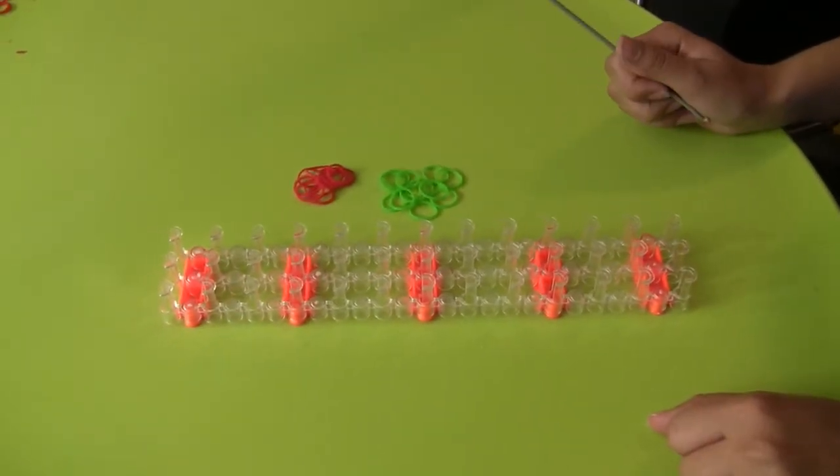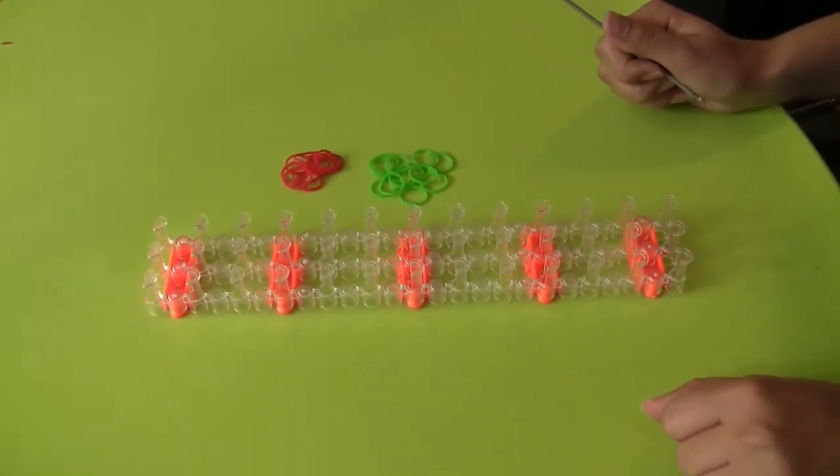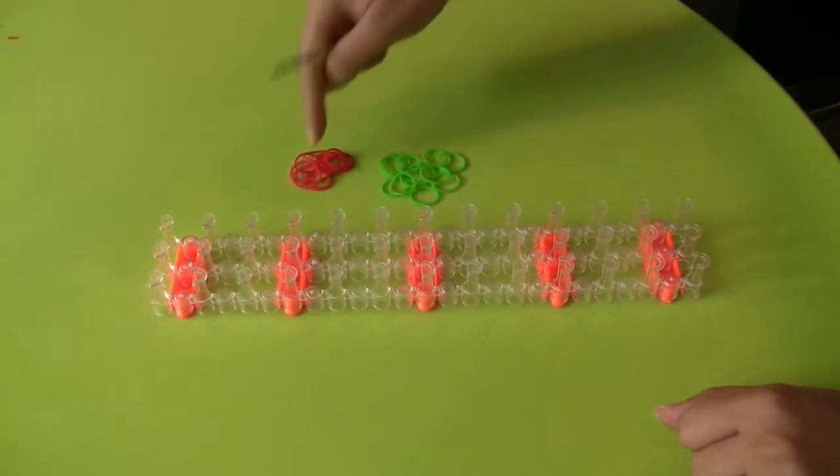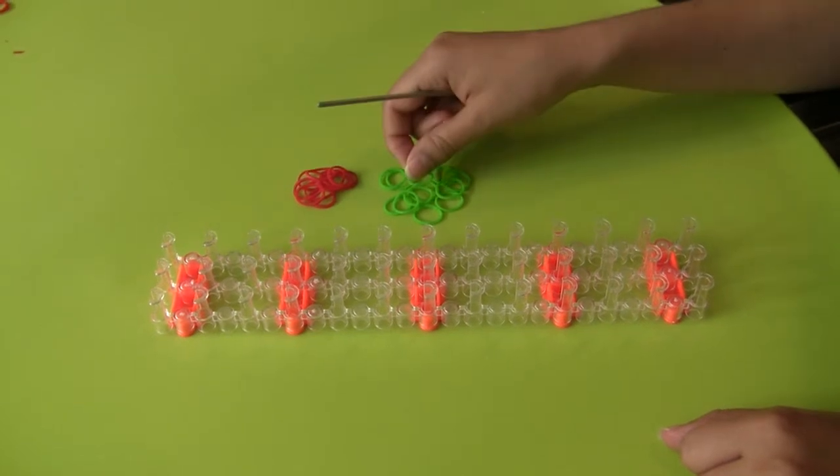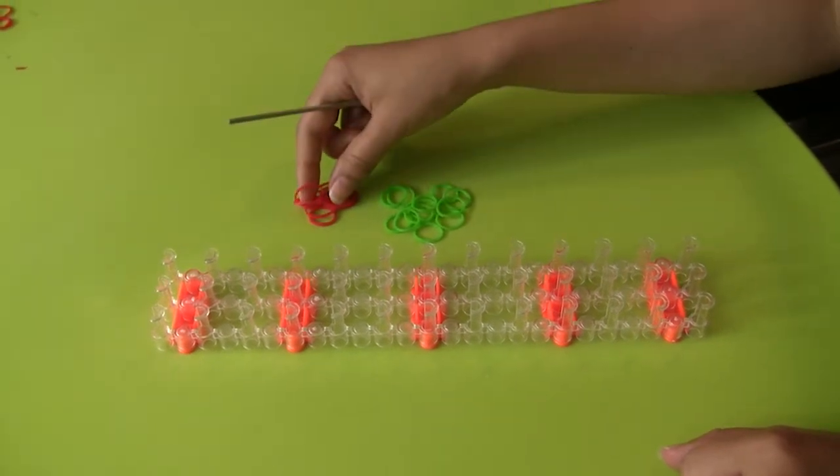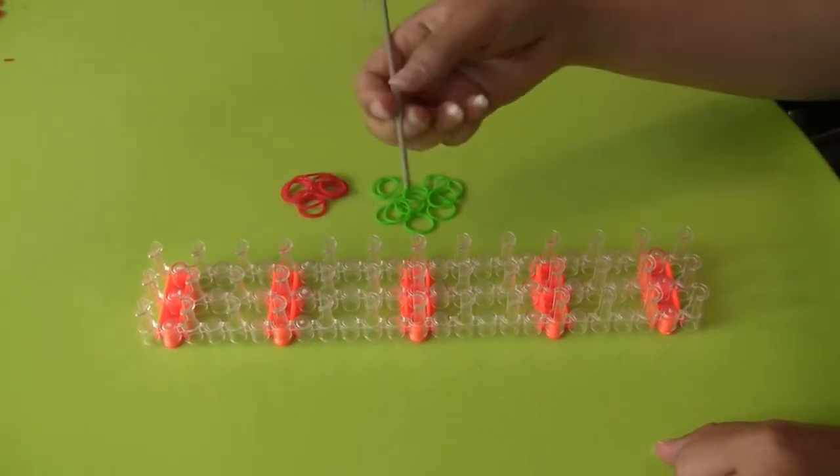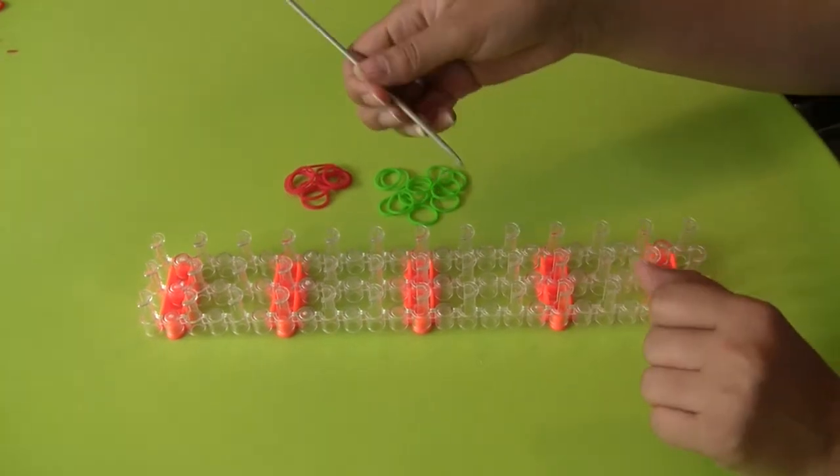I'm going to teach you how to make a single chain loom bracelet with these colors. I'm using 12 green loom bands and 11 red bands. I'll be using this hook to loom.